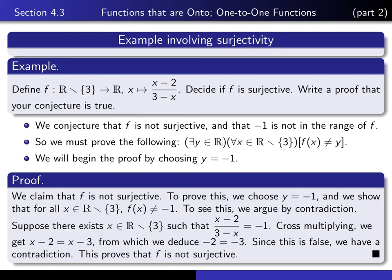So here's the proof. It's not very difficult. We claim that f is not surjective. To prove this, choose y equal to minus 1. We're going to show that for all x in our domain, f(x) is not equal to minus 1. So to see this, we argue by contradiction. Suppose there does exist an x in our domain such that this is true.